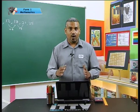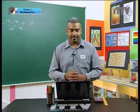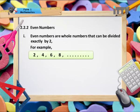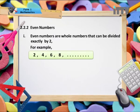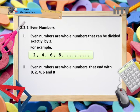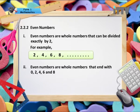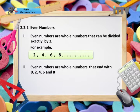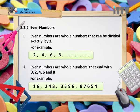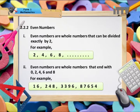What is the opposite of odd numbers? Even numbers. Even numbers are whole numbers that can be divided exactly by 2 — for example, 2, 4, 6, 8 and so on. Even numbers are whole numbers that end with 0, 2, 4, 6, and 8. For example: 16, 248, 3396, and 87654.